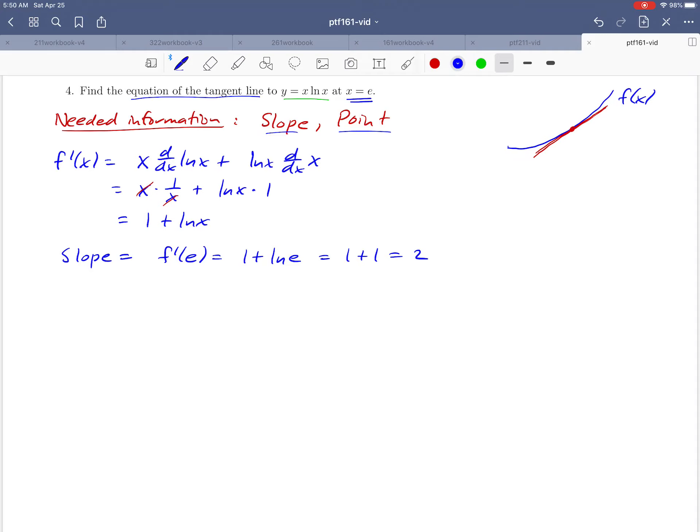And then the other piece of information we need is a point on the line. And here, our picture might help us a little bit. You might notice that this point, there's a point that's on both the tangent line and the function at the number x equals e. So if we want to find a point on our tangent line, all we really need to do is to take that number x equals e and substitute it back into our formula.